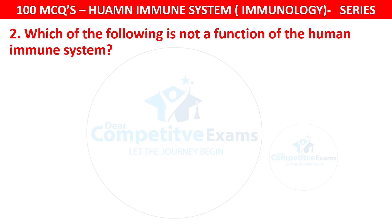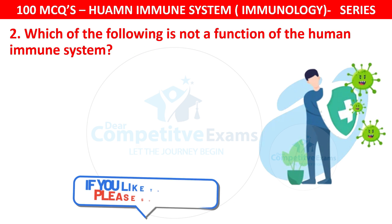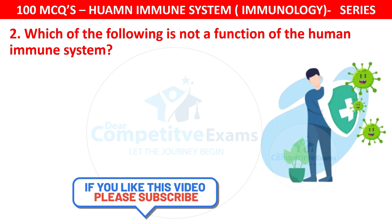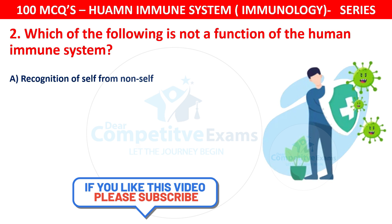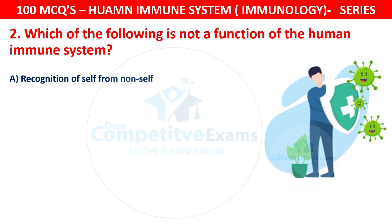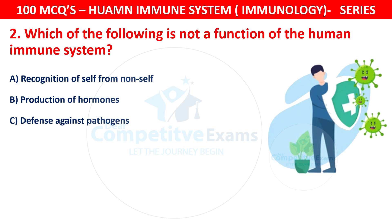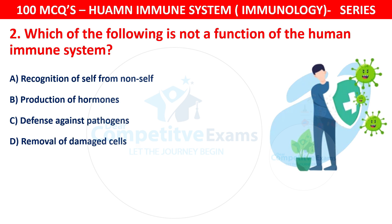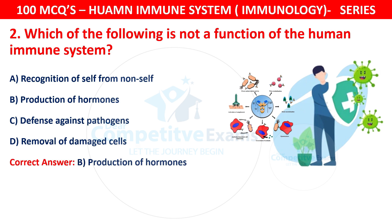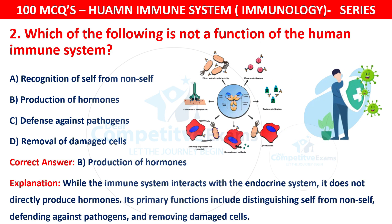Question 2. Which of the following is not a function of the human immune system? Your options are: recognition of self from non-self, production of hormones, defense against pathogens, or removal of damaged cells. The correct answer is B — production of hormones. While the immune system interacts with the endocrine system, it does not directly produce hormones. Its primary functions include distinguishing self from non-self, defending against pathogens, and removing damaged cells.